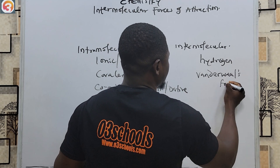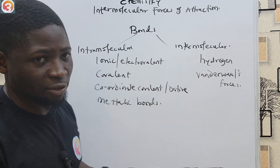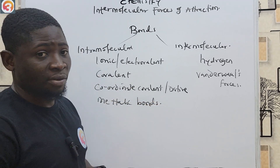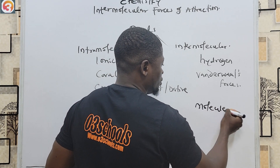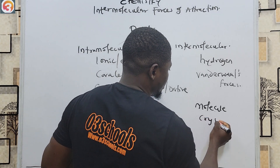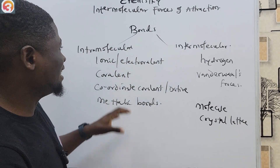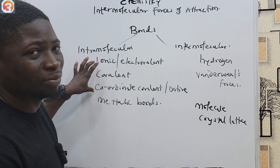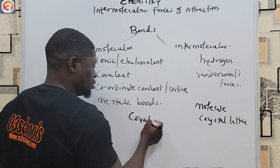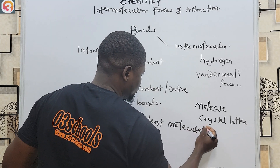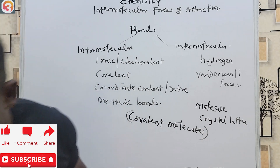Van der Waals forces are the most common intermolecular forces of attraction — they are weak forces. Intermolecular forces of attraction are those forces that exist between molecules and between a molecule and a crystal lattice. They are generally weaker than intramolecular forces, and they occur mainly in covalent molecules. The two most common intermolecular forces are hydrogen bonds and van der Waals forces.